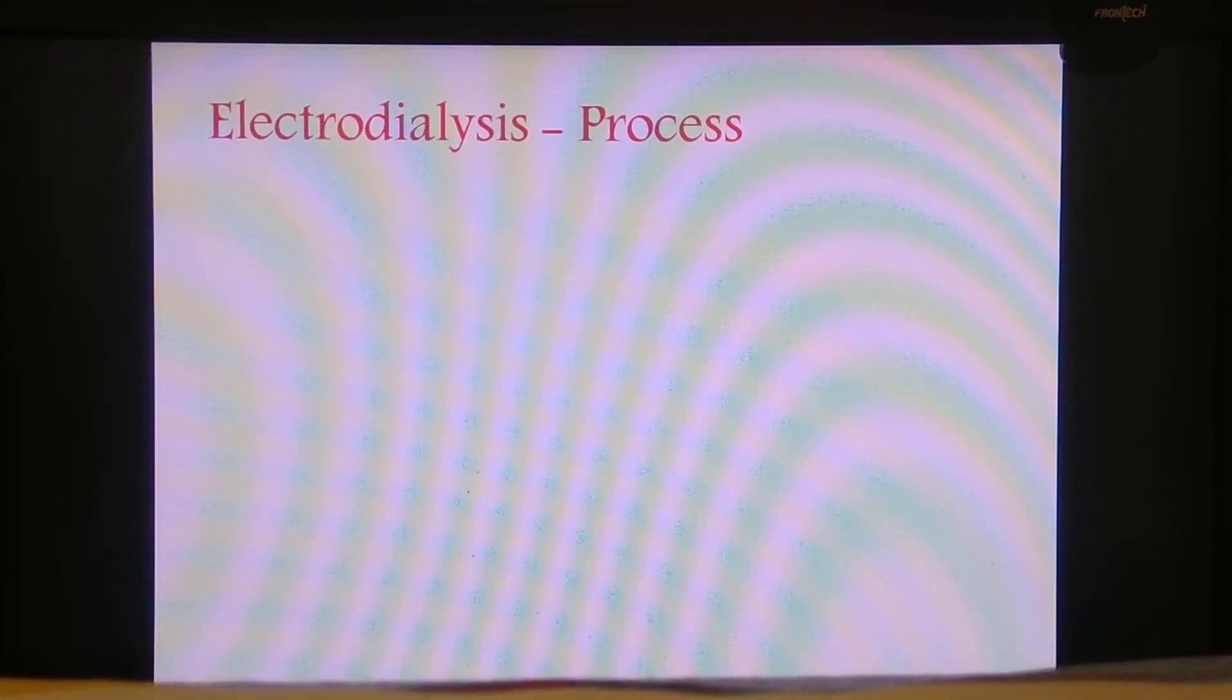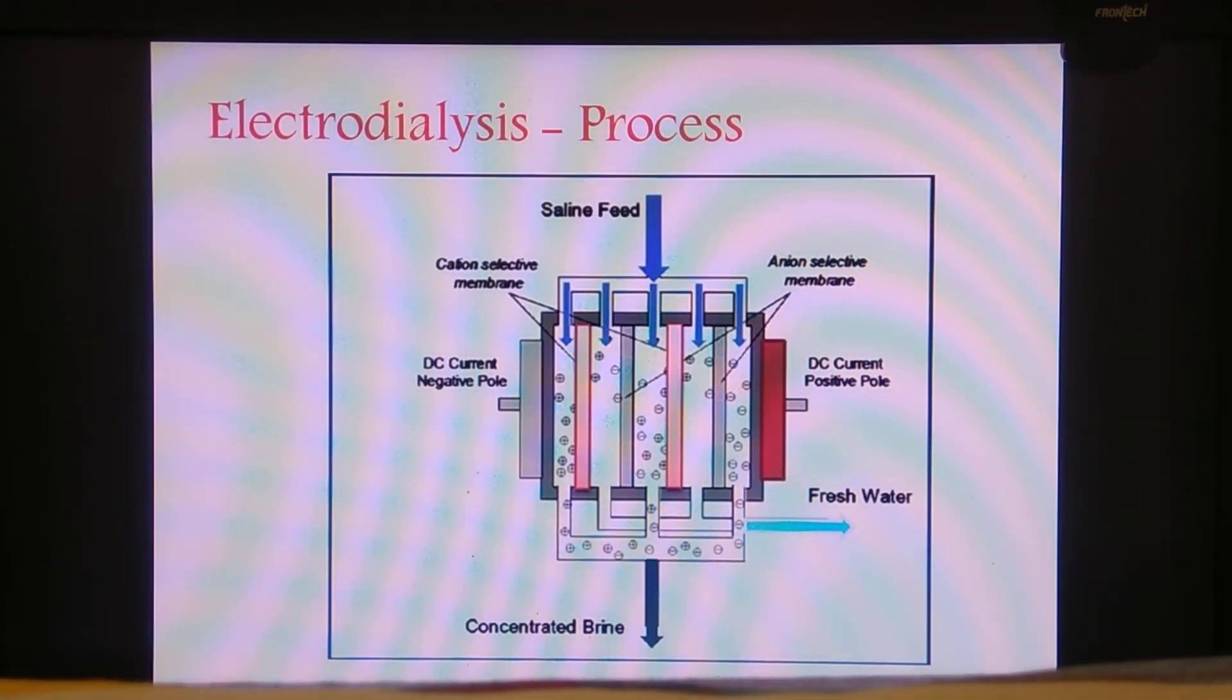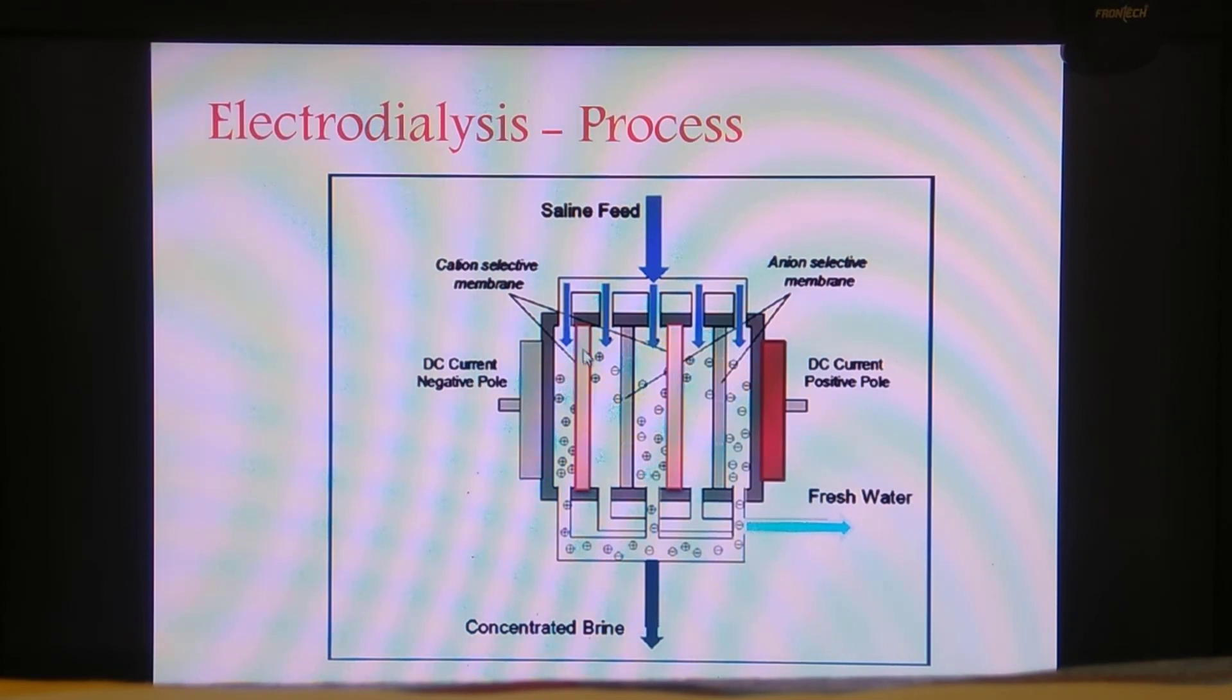Once the water is pre-treated, then we carry out the phenomena of electro dialysis. This is the diagrammatic display of the electro dialysis phenomena wherein the saline water or the water to be treated is passed into the electro dialyzer which contains a negative pole and a positive pole of a DC current, and we have got membranes. The red marking indicating the cation selective membrane and the gray marking is an anion selective membrane.